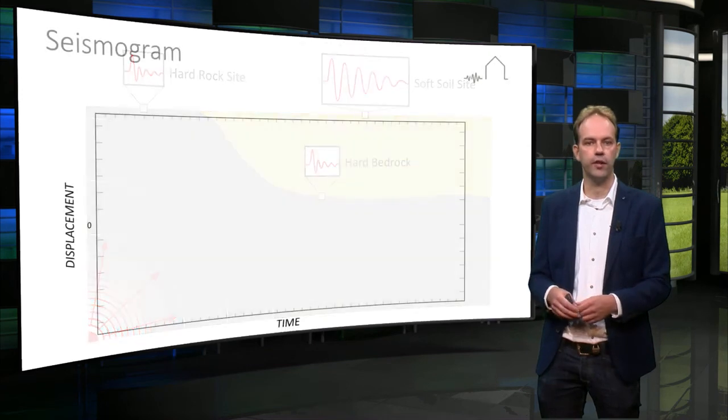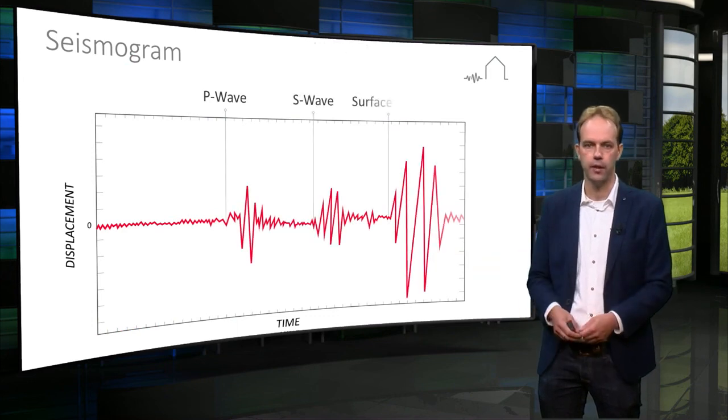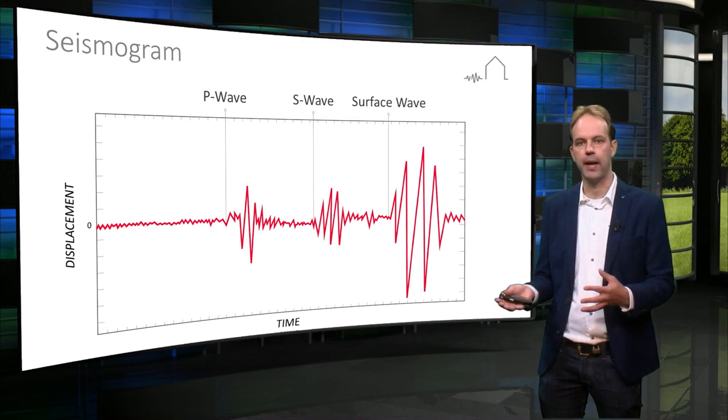So in this lecture, we looked at the type of seismic waves generated by an earthquake, and how its energy propagates away from the earthquake location. In the next lecture, we will explain how earthquake magnitudes are being defined and determined for engineering design.